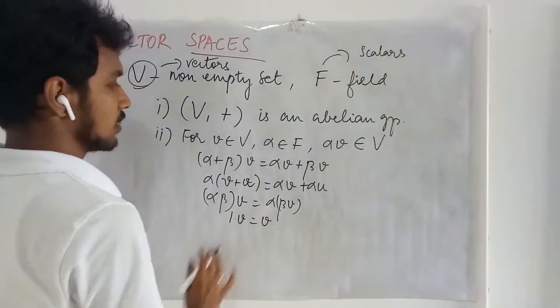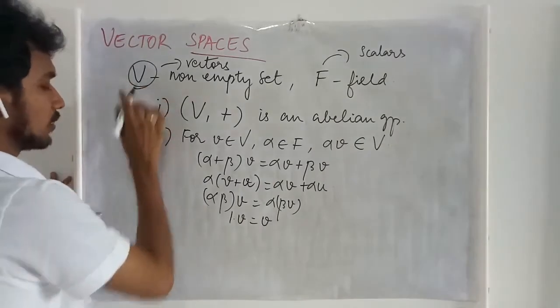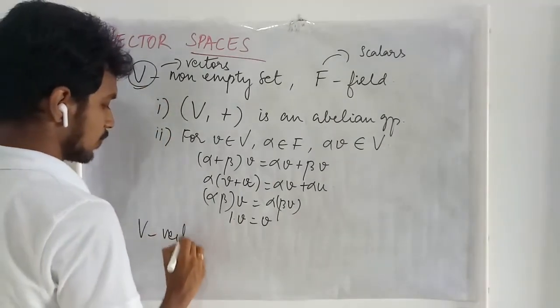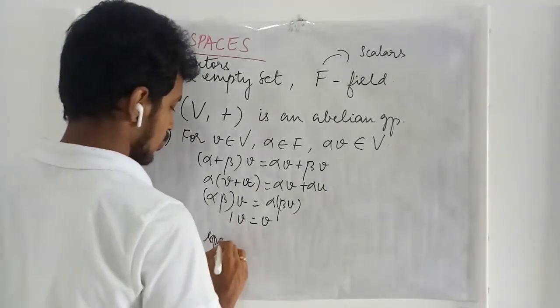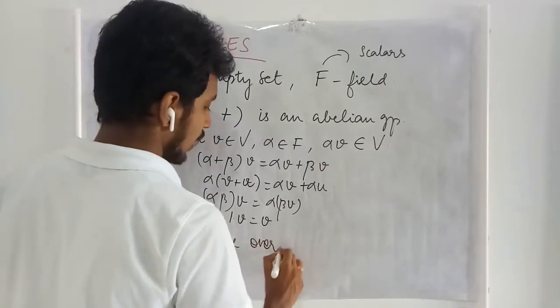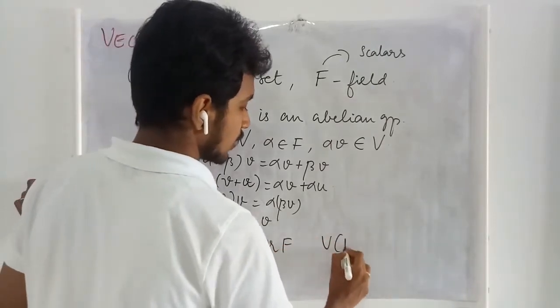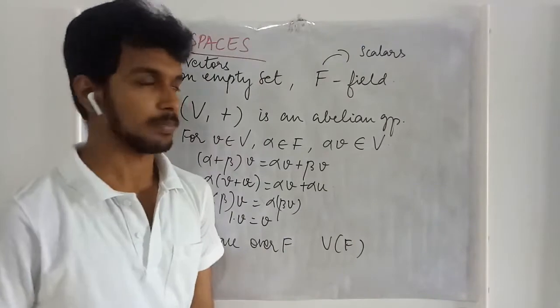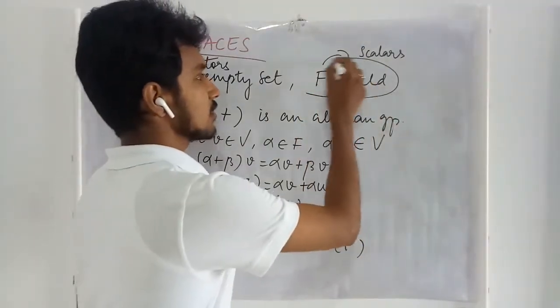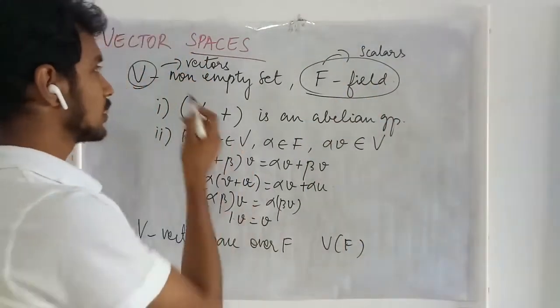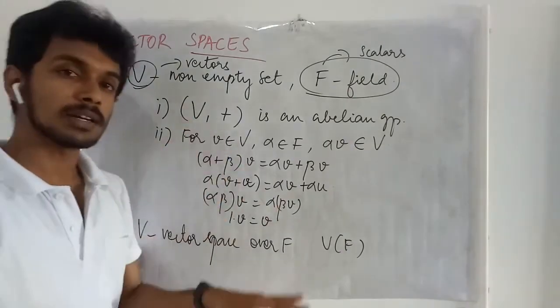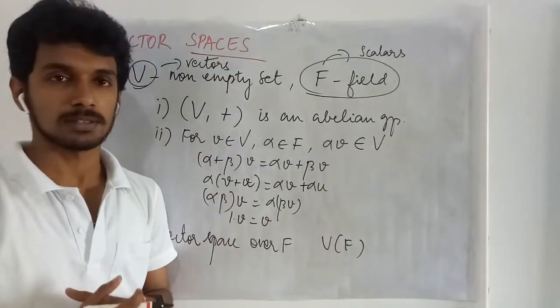If it satisfies these conditions then we may call this V as a vector space over the field F and it can be written as simply V of F. Whenever we change this field the same set may be a vector space or may not be a vector space.